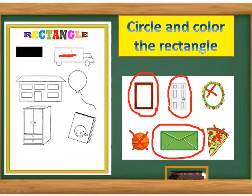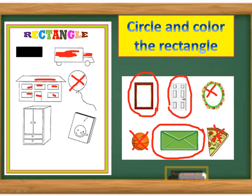Here we are going to color the rectangular shapes: one, two, three, four, five, six, seven, eight, nine. This one is all a rectangular shape. This one? No. This one — the book? Yes. The cupboard? Yes, from all sides it has big and small rectangles, so we color it all.